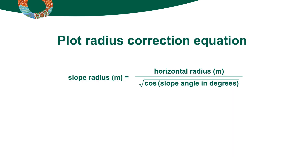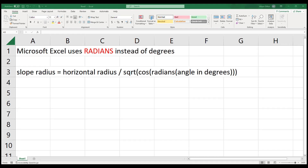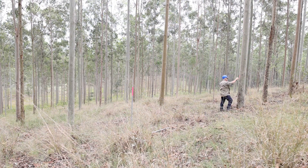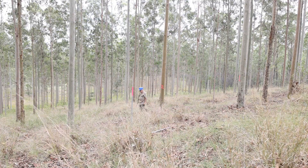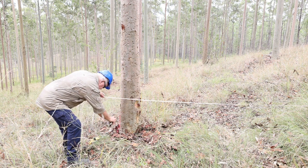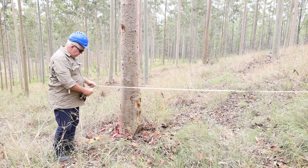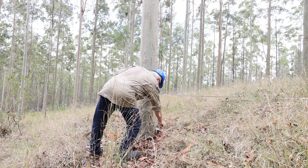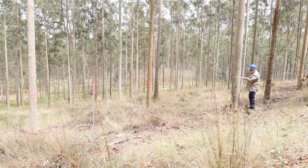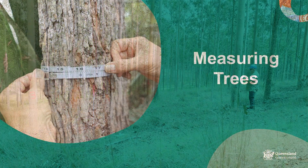For example, if the plot radius for flat ground is 12.62 metres and the slope of your plot is 16 degrees, the corrected radius to use would be 12.87 metres. If you are using Microsoft Excel to calculate the slope radius, remember that Excel uses radians instead of degrees. Using the correct radius for the slope, number each tree within the plot boundary until a complete circle is marked. Numbers should face the centre of the plot. Check the distance to the centre as required. At times you will find trees right on the edge of the plot, called borderline trees — if more than half the stem at 1.3 metres of height is inside the plot, include the tree; if not, do not include it. When you have marked out the plot, you can proceed to measure various aspects of the trees within it. For more details on this part of the process, watch the next video on measuring trees.